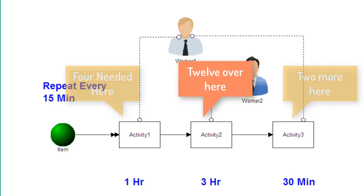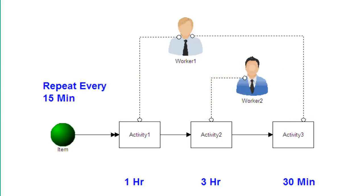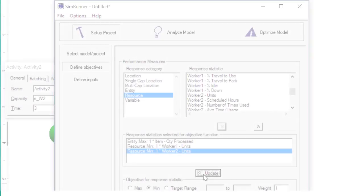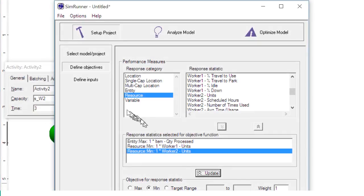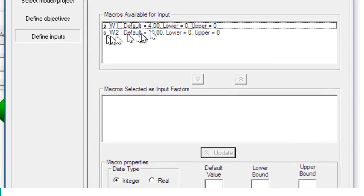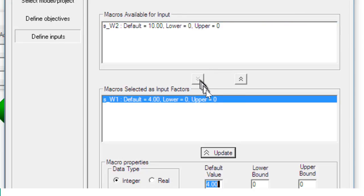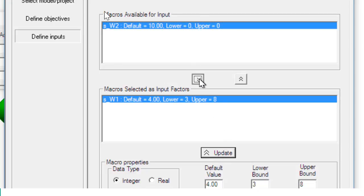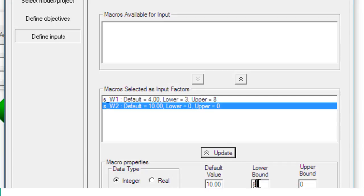If the needs weren't known ahead of time, we would have to estimate the possible range and then let the computer experiment to find the best settings. Pretending like the answer isn't known, we could set the range of worker one between three and eight, and the range of worker twos between eight and fourteen. The default needs to be within the range and acts as a best guess.